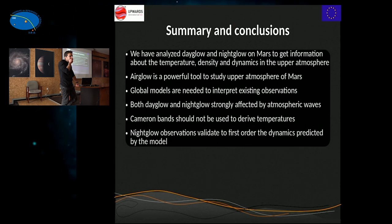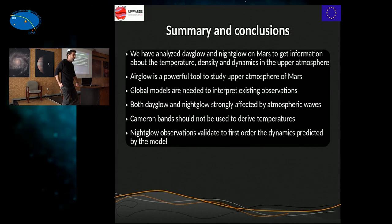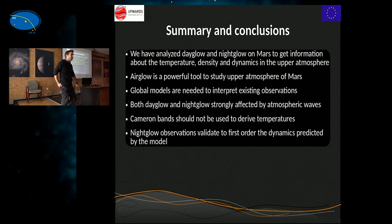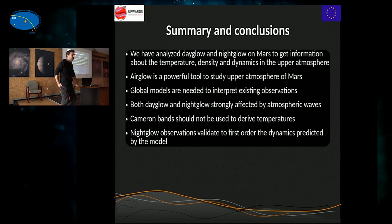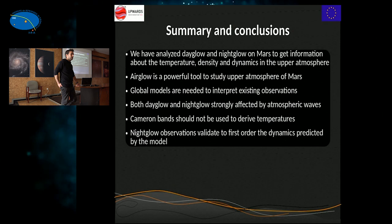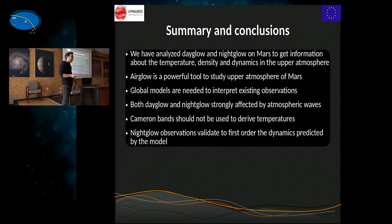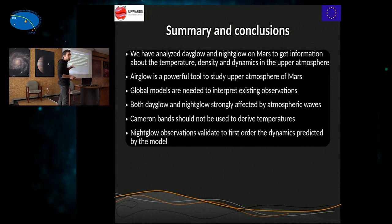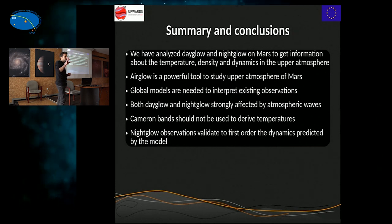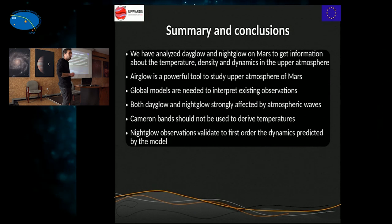SPICAM had another channel in the middle infrared, and there was a measurement of the 1.27 micron O₂ nightglow. Do you use this data? We have not used that — we focused on the UV. But in fact we can simulate that emission with the model. It's easy because it's just the recombination of oxygen atoms, and you get a very similar picture to the NO nightglow. The only difference is that NO nightglow is produced at maybe 80 km altitude, and the O₂ nightglow is a bit lower, maybe 40–50 km. But the overall picture is the same. We just never went to compare those observations with the model.